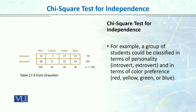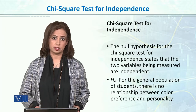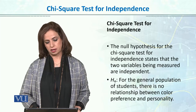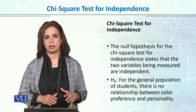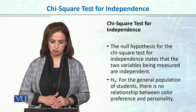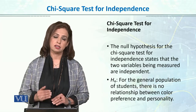What we test is whether both variables — personality and color choice — are independent. The null hypothesis for the chi-square test of independence states that the two variables being measured are independent, meaning there is no link or relationship between them. For example, there is no relationship between color preference and personality.